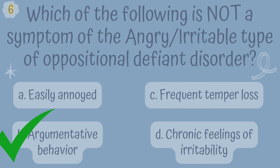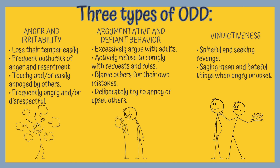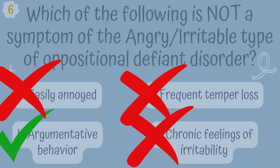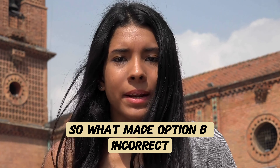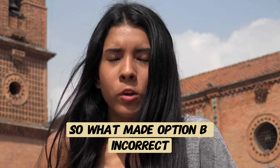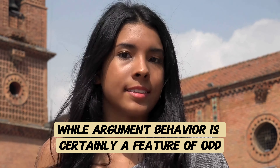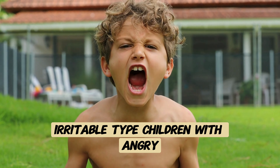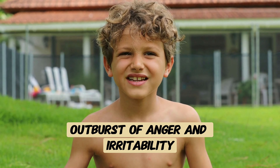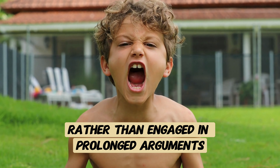Option A, Easily annoyed, is a hallmark symptom of the angry, irritable type. Option D, Chronic feelings of irritability, is essentially the defining feature of this type. Option B, argumentative behavior, is more characteristic of the argumentative/defiant type rather than the angry/irritable type. Children with the angry, irritable type are more prone to explosive outbursts of anger and irritability rather than engaging in prolonged arguments with authority figures.